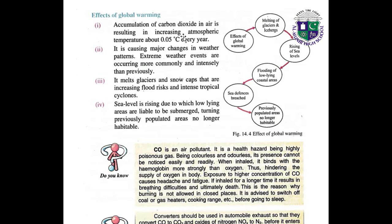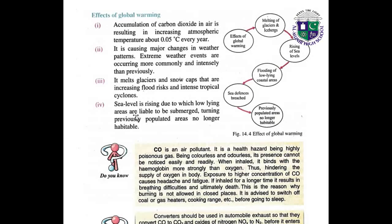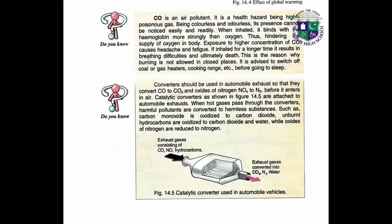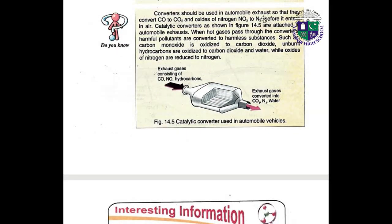What are the effects of global warming? Accumulation of CO2 in air is resulting in an increasing atmospheric temperature of about 0.05°C every year. It is causing major changes in weather patterns. It melts glaciers and snow caps, increasing flood risk. Sea levels are rising, due to which low-lying areas are liable to be submerged. Carbon monoxide (CO) is an air pollutant and health hazard — being highly poisonous, colorless, and odorless, its presence cannot be noticed easily. When inhaled, it binds with hemoglobin more strongly than oxygen and causes harm. Catalytic converters should be used in automobile exhausts to convert CO to CO2 and oxides of nitrogen to N2 before they enter the air.